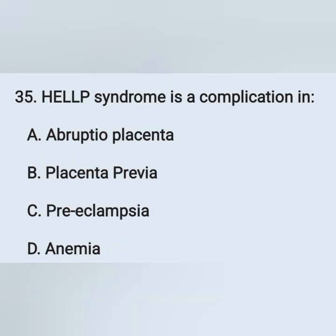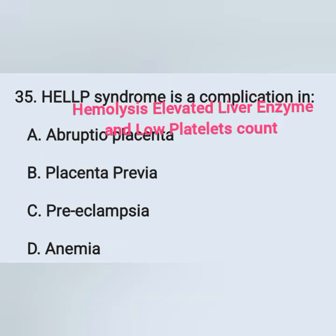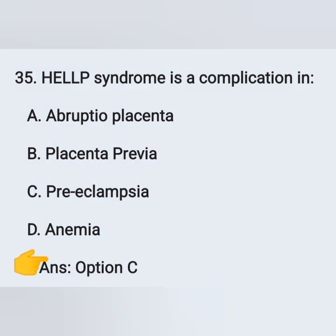Question 35: HELLP syndrome is a complication of — options: option A, abruptio placenta; option B, placenta previa; option C, eclampsia; option D, anemia. HELLP syndrome means hemolysis, elevated liver enzymes, and low platelet count. It is mainly associated with hypertension and proteinuria, and is seen in cases of pre-eclampsia. Option C is the correct answer.